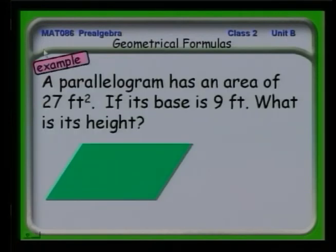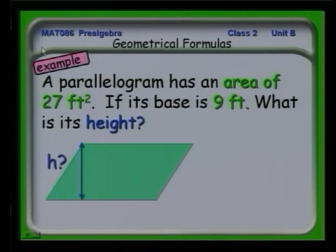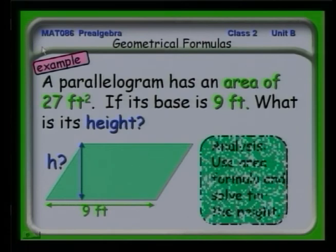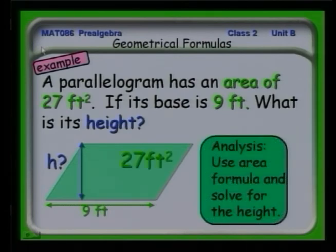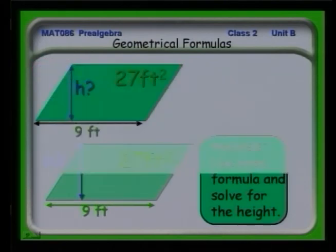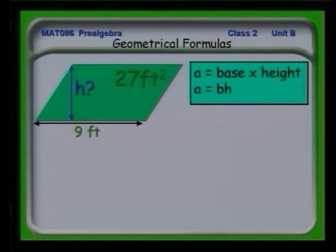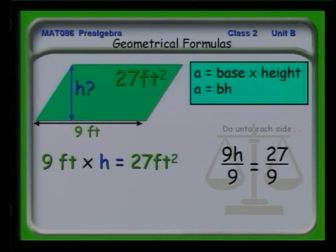Let's look at an example of a problem using these kinds of formulas. A parallelogram has an area of 27 square feet. If its base is 9, what is its height? We identify the information and find out what we're asked. We're looking for the height of the parallelogram, and we know the base and the area. The area is 27 square feet. The base is 9. We need to know the height. We remember that the area is the base times the height. So we have 9 times the height is equal to 27 square feet. We have an equation for which we can divide both sides by 9, and we find out that the height is 3 feet.